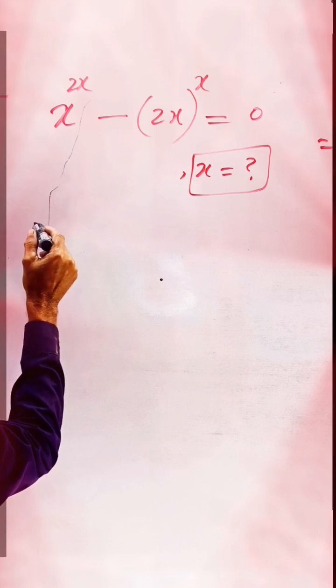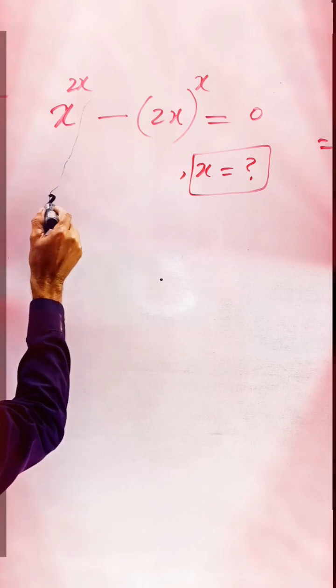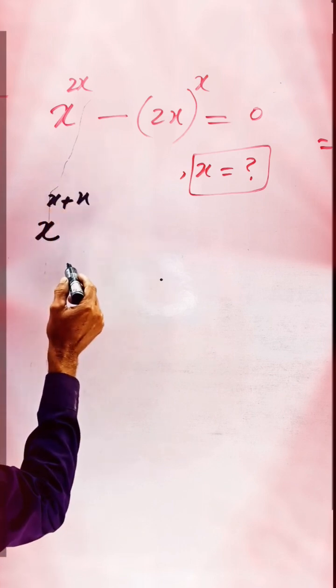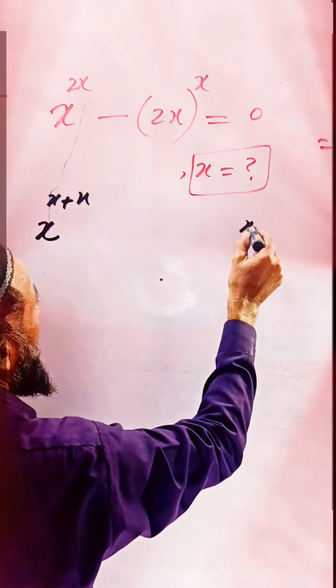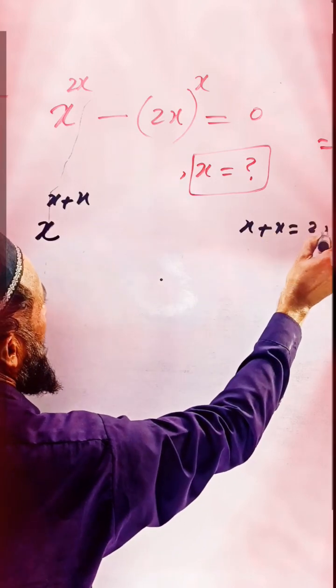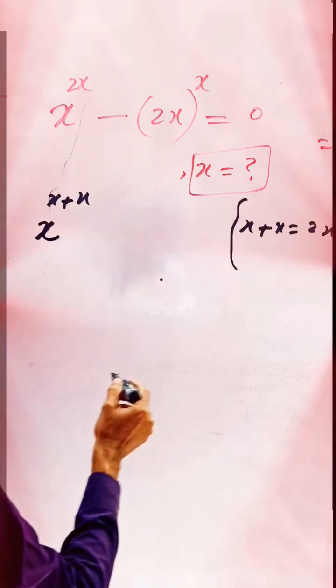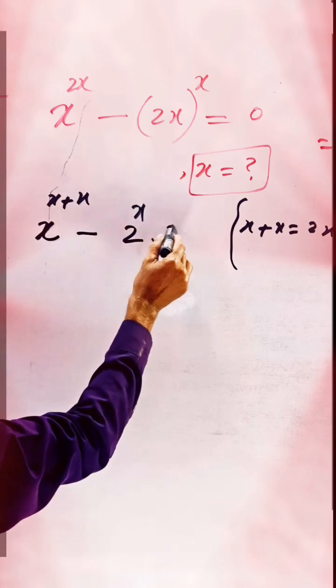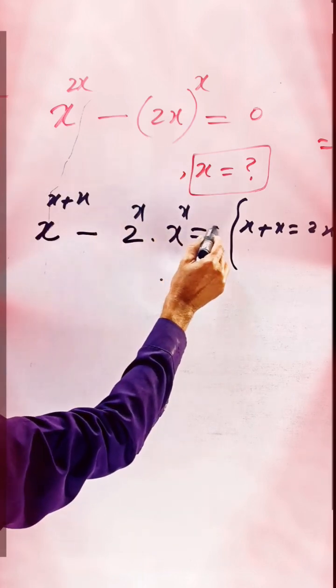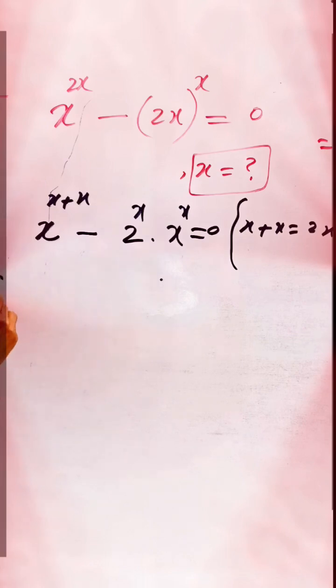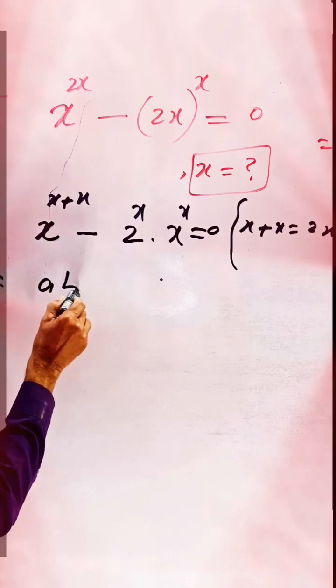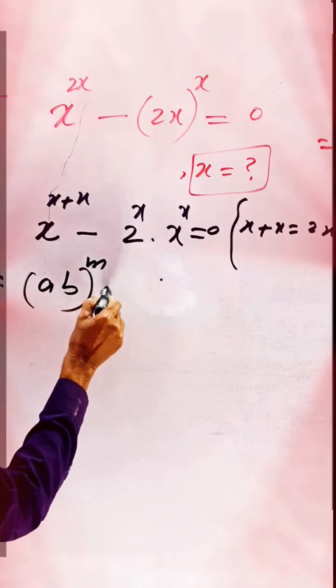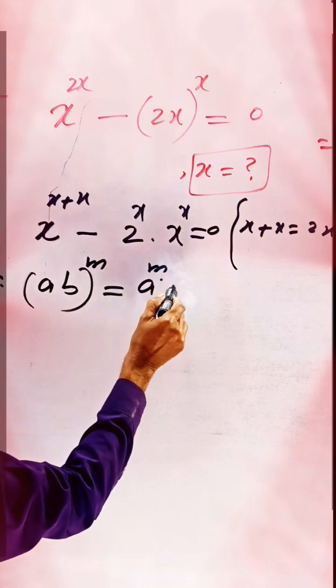Similarly, here according to the rule, 2 to the power of x times x to the power of x is equal to 0. Because we know that this result: a to the power of m times b to the power of m equals ab to the power of m.